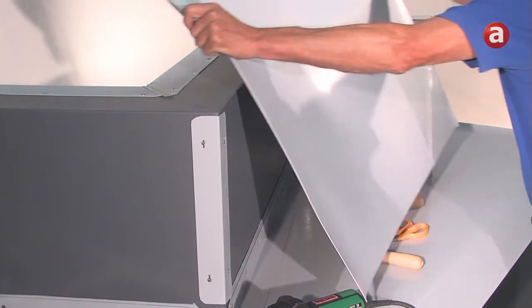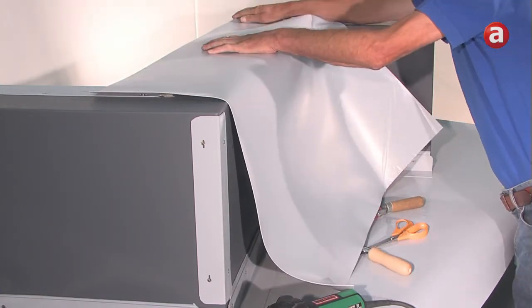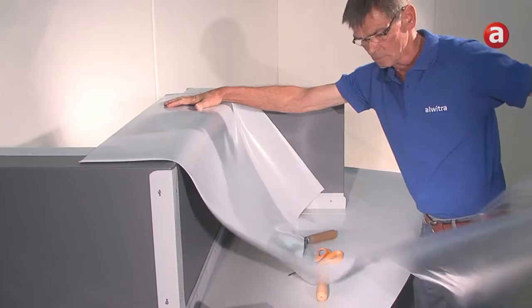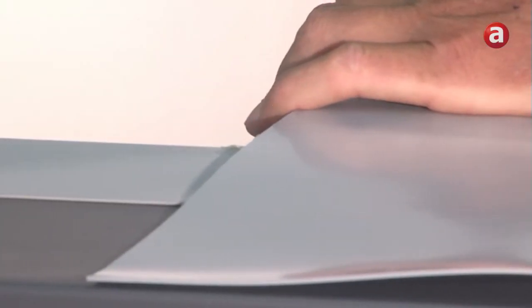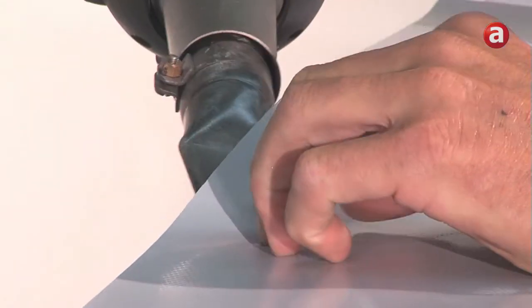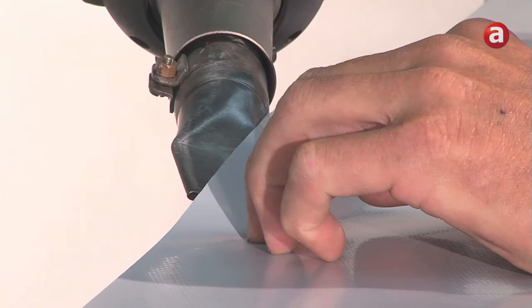If you are using an unbacked Avalon tape, the protective film needs to be peeled off. Afterwards, the tape should be aligned and temporarily tacked at the top of the parapet.